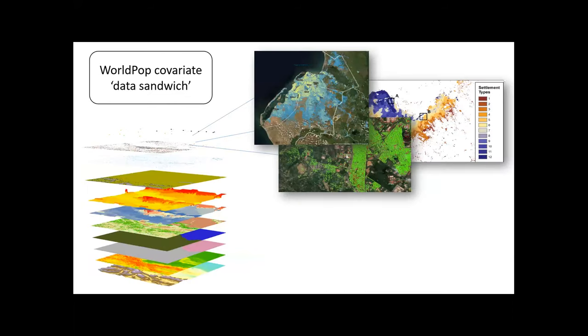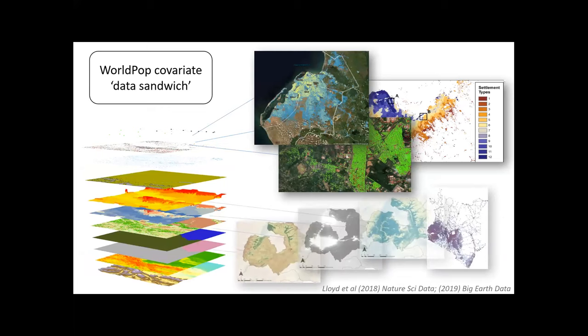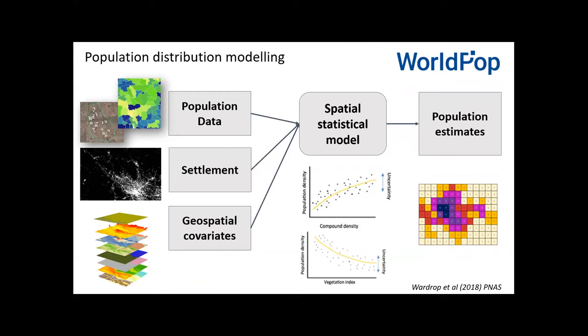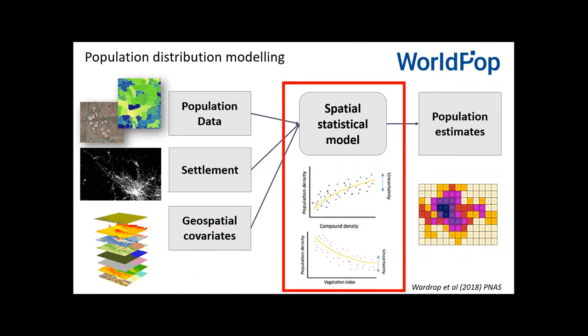We build up what we call a covariate data sandwich — all these different datasets describing how populations vary across the landscape. This includes building footprints, vegetation maps, satellite images of the earth at night where brightly lit areas correspond to higher population densities, and mapping of health facilities, villages, and road networks. These are the three ingredients that go into producing population estimates.